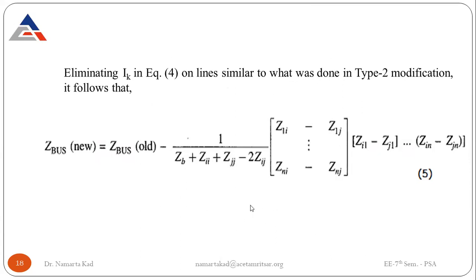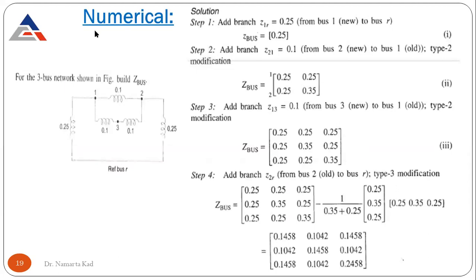Now let's see a numerical example related to the Z bus building algorithm. For a 3-bus network, we have to build the Z bus. There is bus number 1, bus number 2, bus number 3, and one reference bus. We follow the same procedure as in the step-by-step method of Y bus formulation — initially assuming Z bus is zero, then connecting each branch one by one.